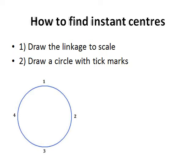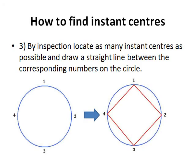Step 1: Draw the linkage to scale. Step 2: Draw a circle of arbitrary radius and place tick marks representing each link with a base frame as link 1 equally around the perimeter of the circle.